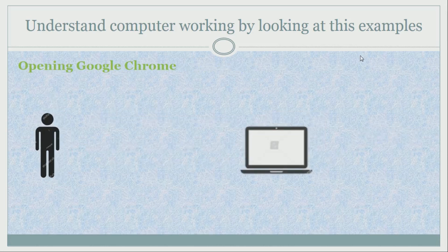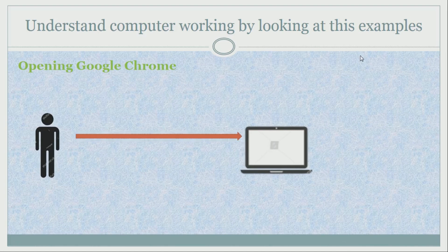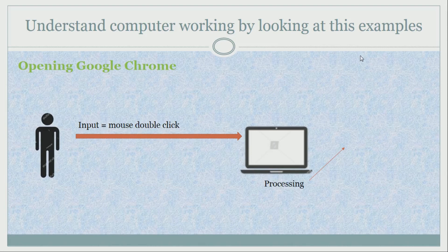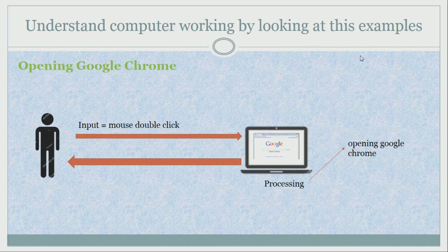Let's look at another example of opening Google Chrome. User input is equal to double click of mouse on the Google Chrome icon placed on the desktop, which requests the computer to open the program. Computer does the processing, which in this case is to open Google Chrome and show on the screen as an output. The user can see the output through the output device in this case, which is the computer screen.